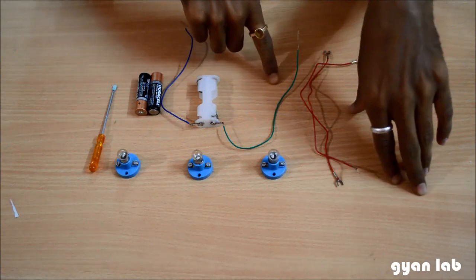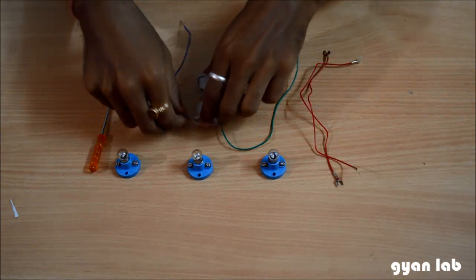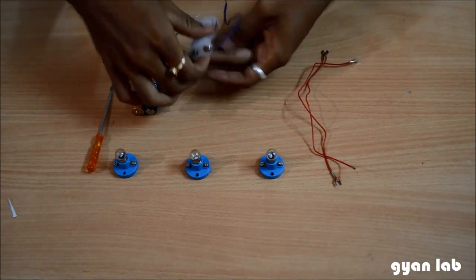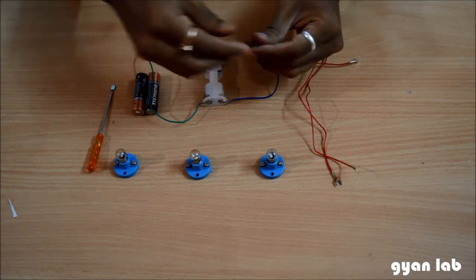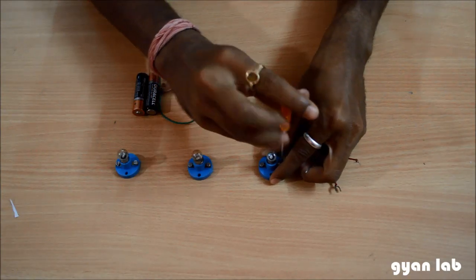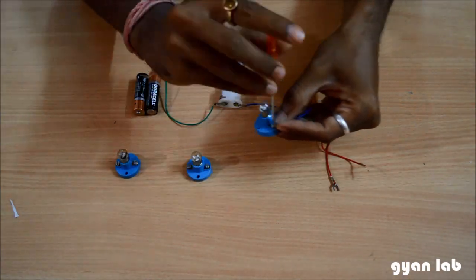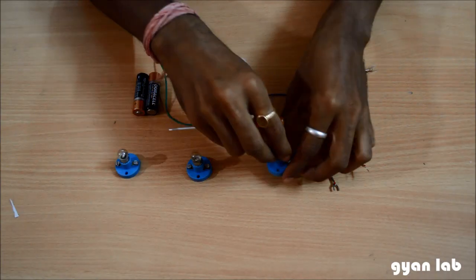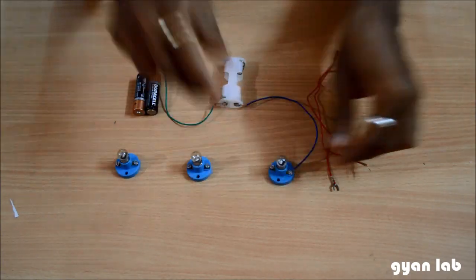What I am going to do is connect the positive end of the power source from the battery holder into the first end of the bulb holder. So that's the first one which is gone in there.